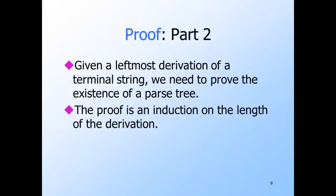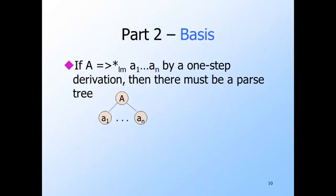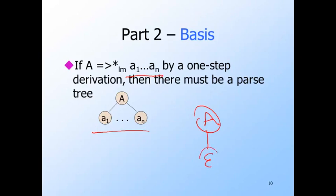Now we need to prove the other direction: that leftmost derivations can be turned into parse trees. The proof is an induction on the number of steps of the derivation. The basis is a one-step derivation, where a variable A is replaced by a string of terminals — perhaps the empty string — using some production for A. If the string is not empty, there's a parse tree of height one with A at the root and the sequence of terminals as the labels of the children. If the body is epsilon, there is a parse tree with A at the root and one leaf labeled epsilon.